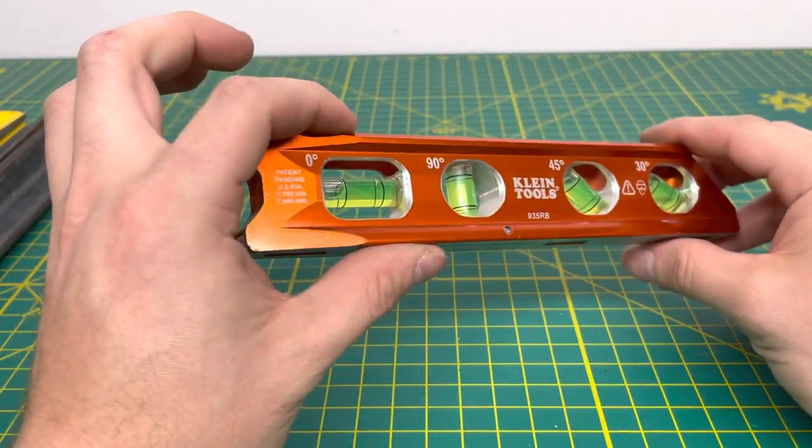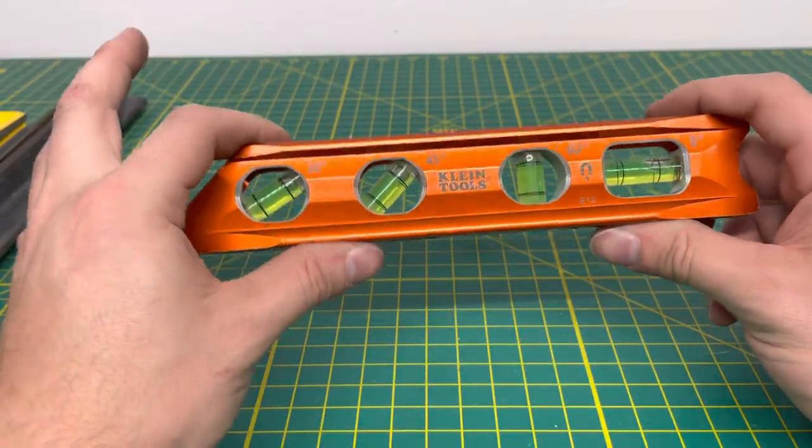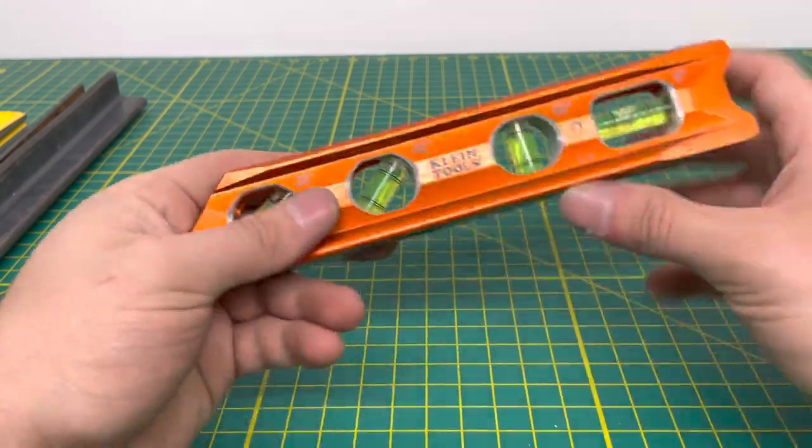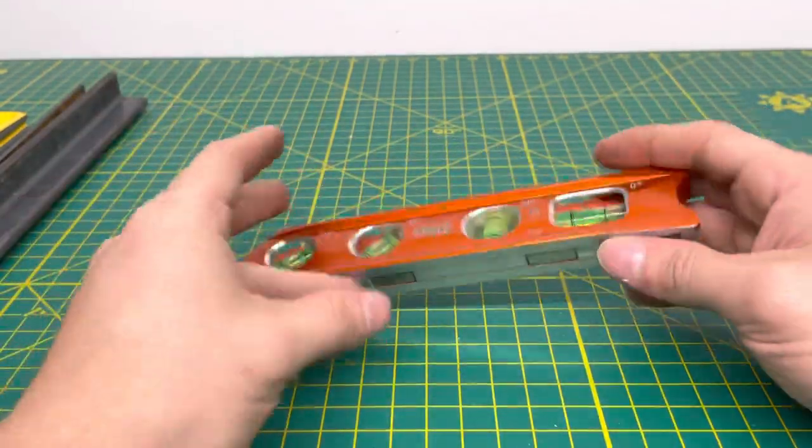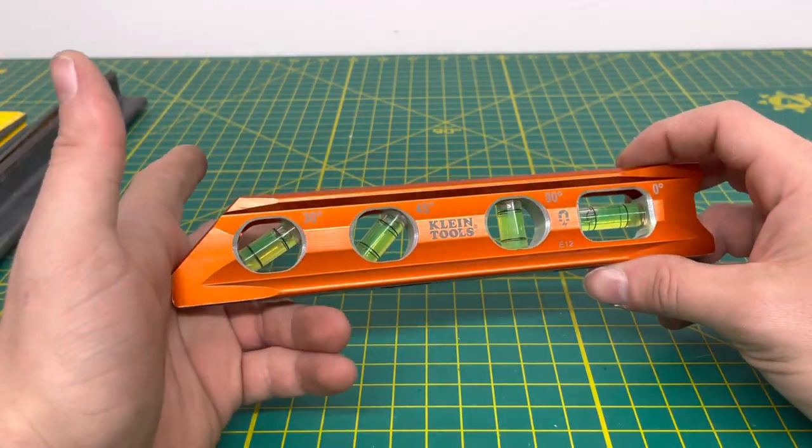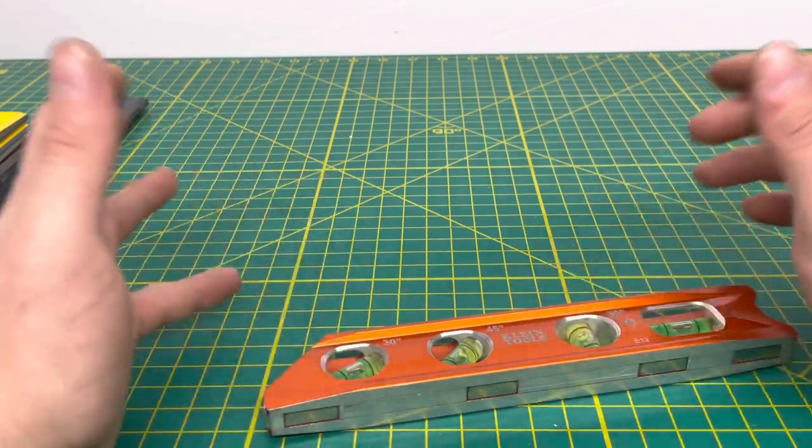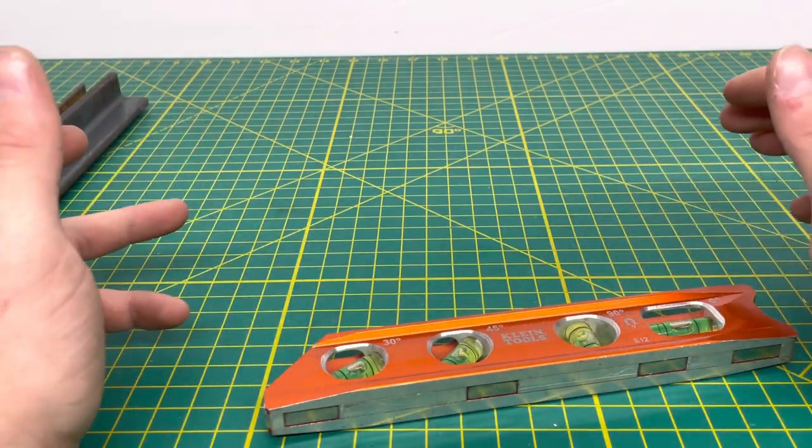I believe this is made in Taiwan, if I'm not mistaken, but it is definitely a fairly nice tool from Klein. So this is the Klein one. I pretty much recommend this one if you're looking to get a nice torpedo level. It's nine inches in size.